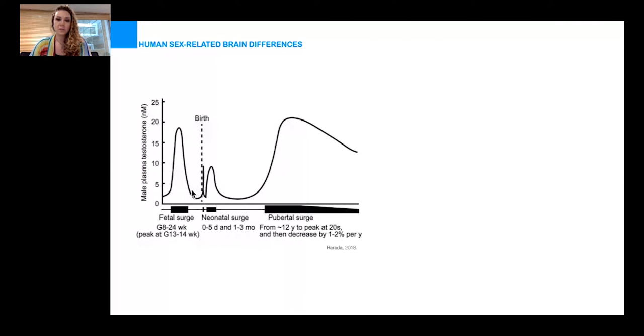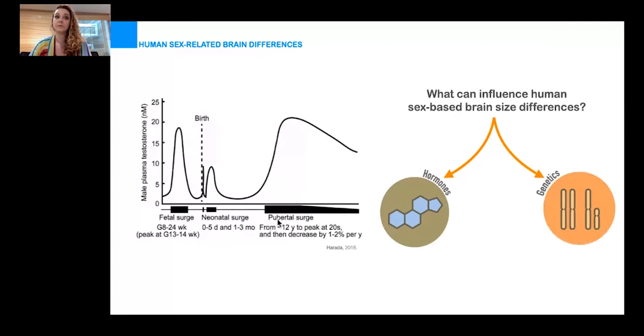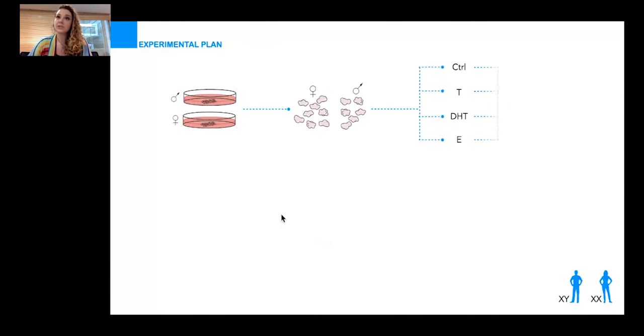We wanted to understand the developmental origins of at least some of these brain differences and tested the effects of sex hormones and the chromosomal complement, XX or XY, on human embryonic neurogenesis. We had a relatively simple strategy: we generated brain organoids from a male and female cell line and exposed them to different sex hormones—androgens, testosterone and DHT (dihydrotestosterone), and estrogen.